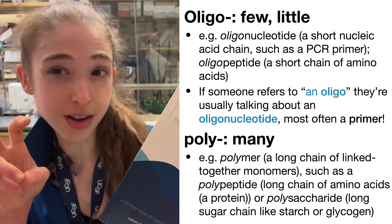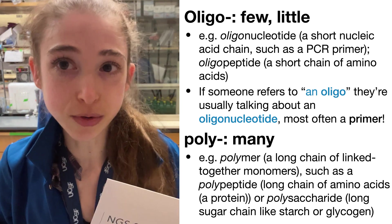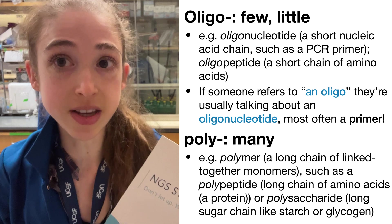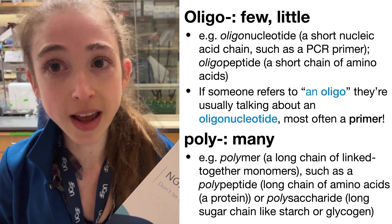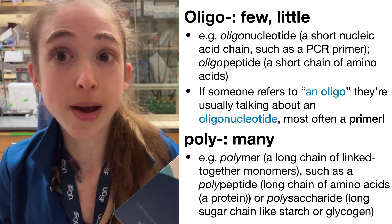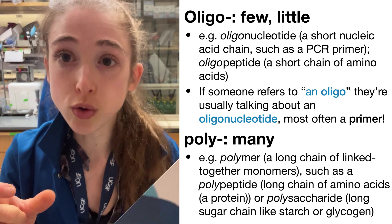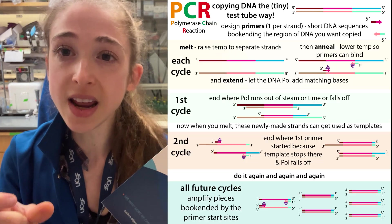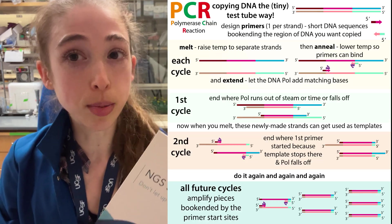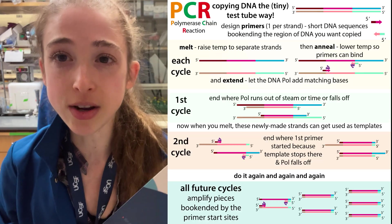If someone talks about an oligo, they're probably talking about an oligonucleotide, which is a short piece of DNA or RNA. Most commonly, we're talking about a DNA primer, which is a short piece of DNA that we use in a technique called polymerase chain reaction, or PCR.